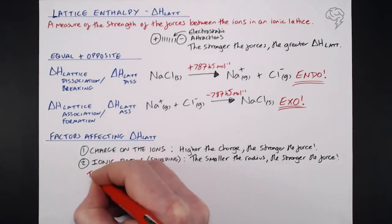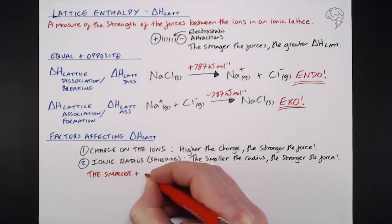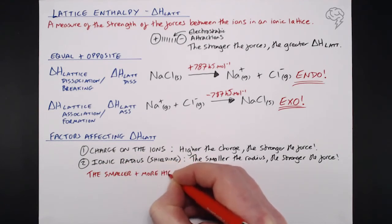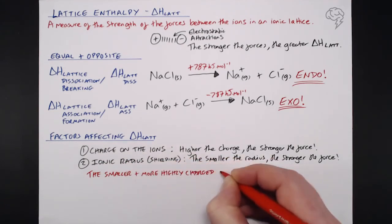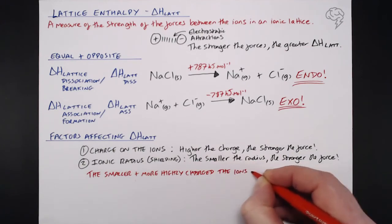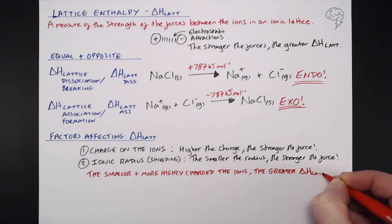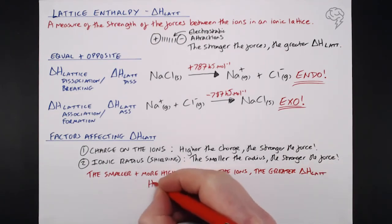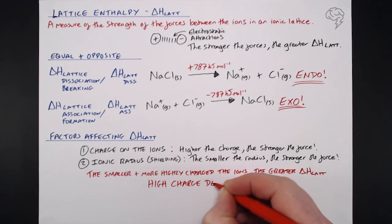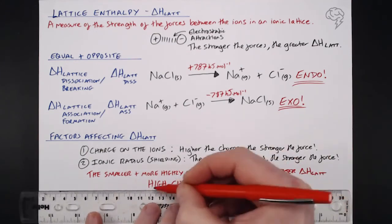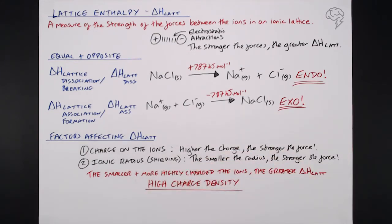So overall, what we're saying is the smaller and more highly charged the ions, the greater Delta H lattice. What we're looking for here is a high charge density. So if you've got a high charge in a small space, the charge density is really, really high. If you've got a small charge in a big space, the charge density is very, very small.